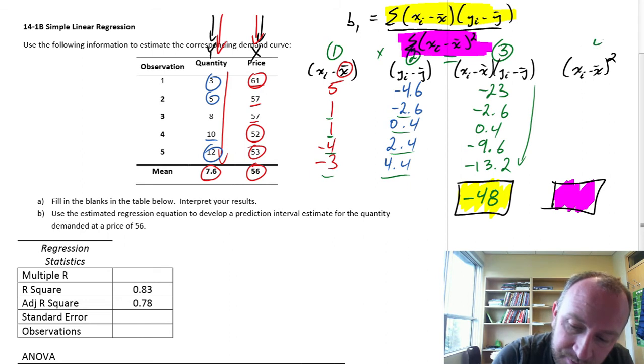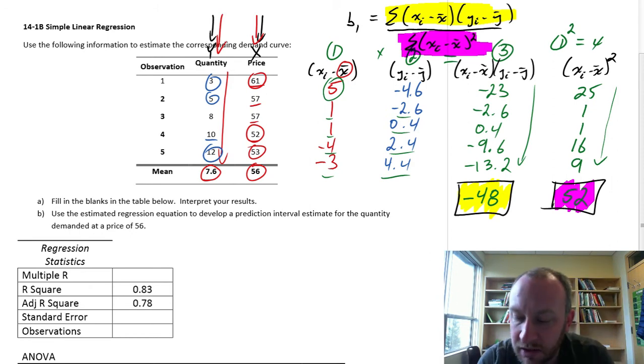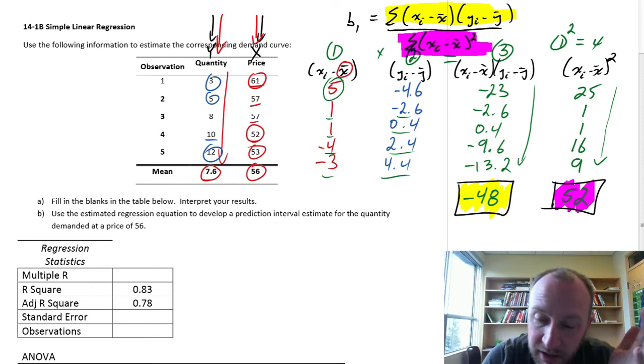Now, our last column 4 is just column 1 squared. 5 squared is 25. 1 squared is 1. Another 1. 4 squared is 16. 3 squared is 9. I add all of these up and this gives me 52. There I have our denominator value.